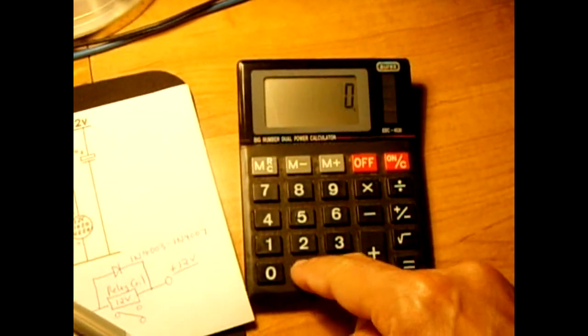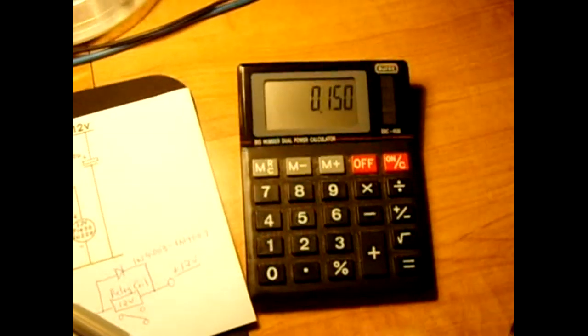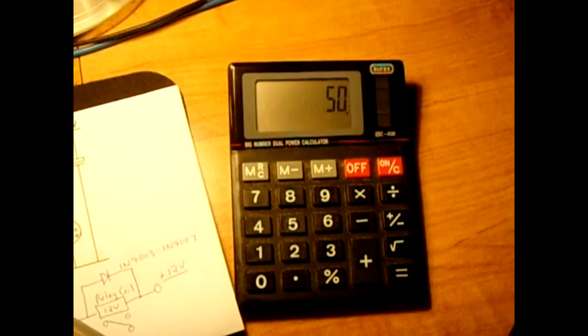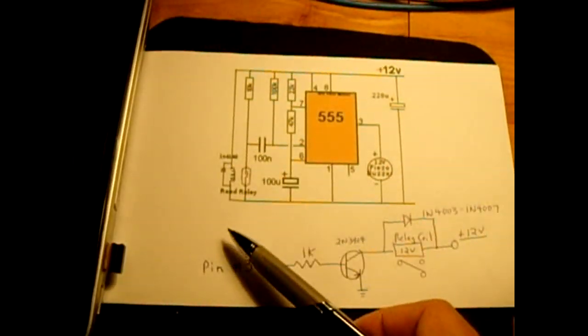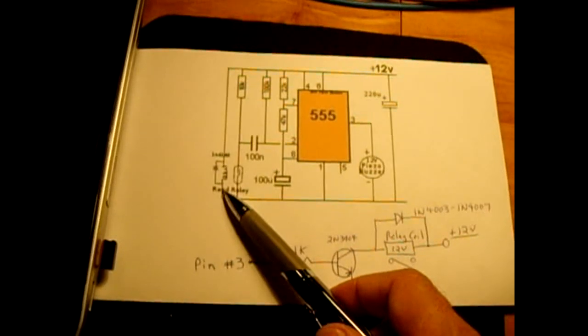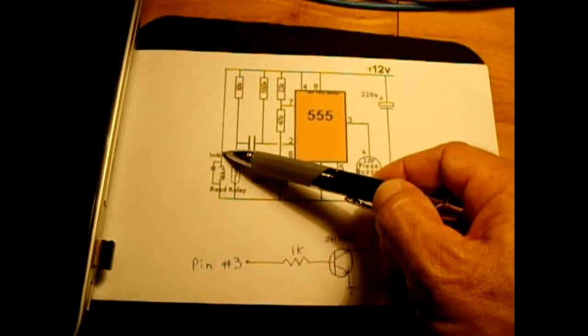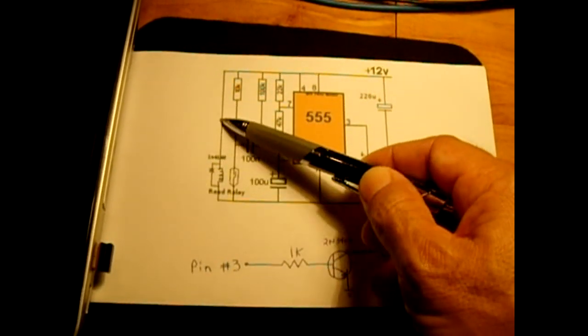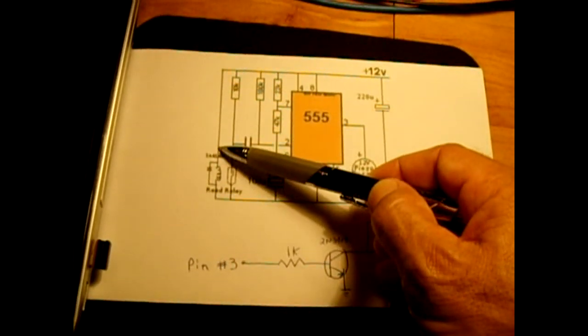You would divide that by 0.150 and that equals 50 ohms. You would put a 5 volt reed relay if that's all you had, and in series with the coil you would put a 50 ohm, say half watt resistor right here.